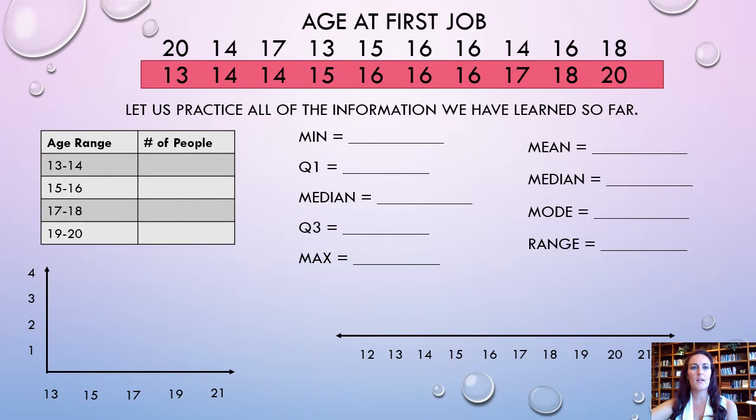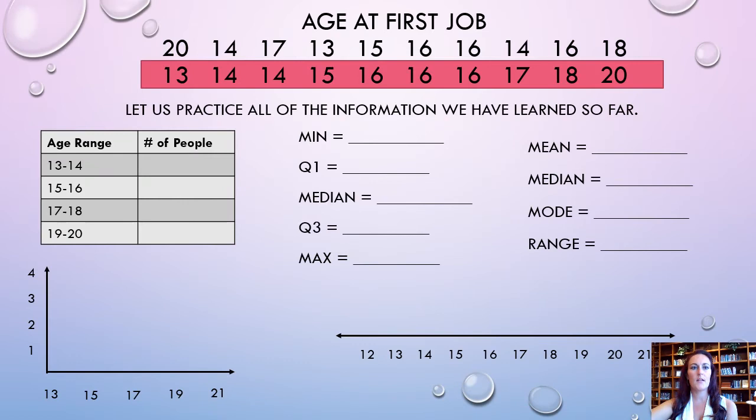Okay, so the first thing we would do is read our question carefully. So, it says the age at first job. So, what we would do is we would notice that there was a 20-year-old, 14, 17, 13, 15, 16, 16, 14, 16, and 18. Okay, so the best thing that I would tell you to do is to go ahead and put these numbers in order from least to greatest. That's going to be your best bet every time.